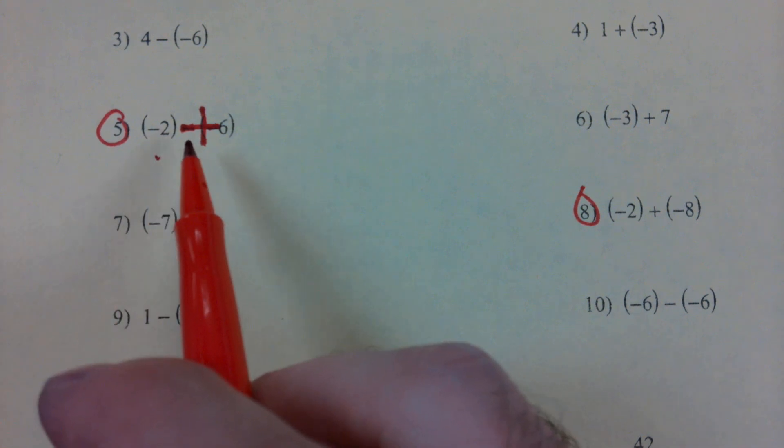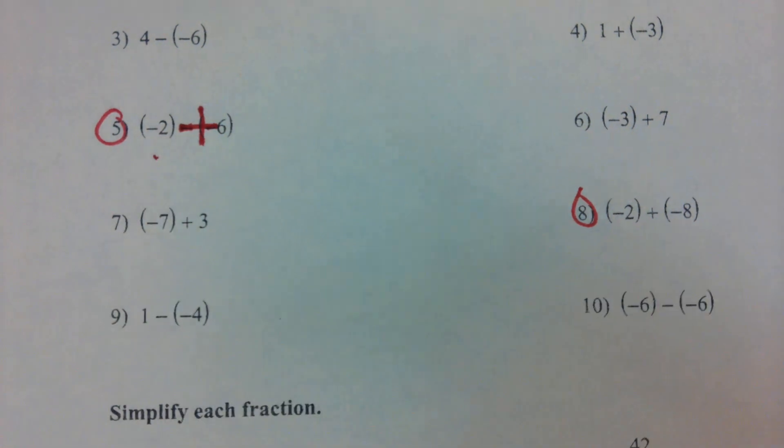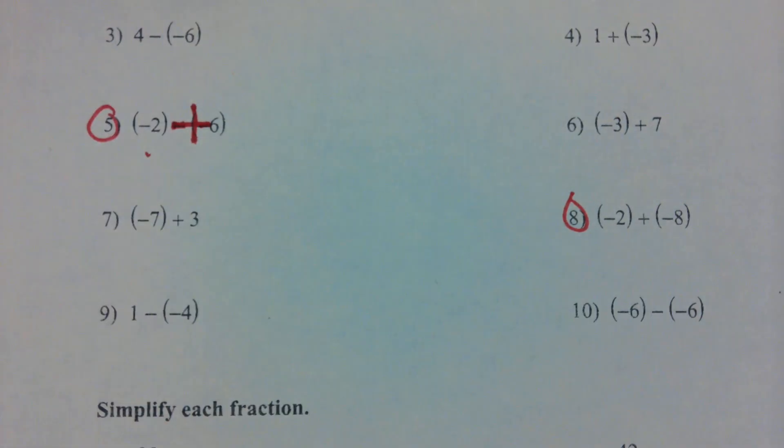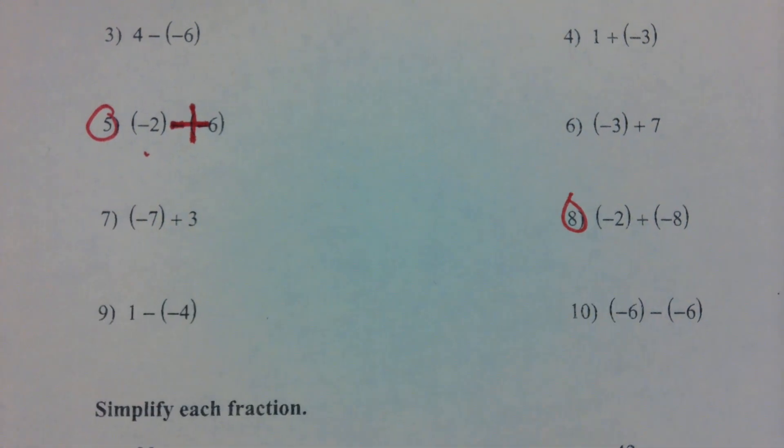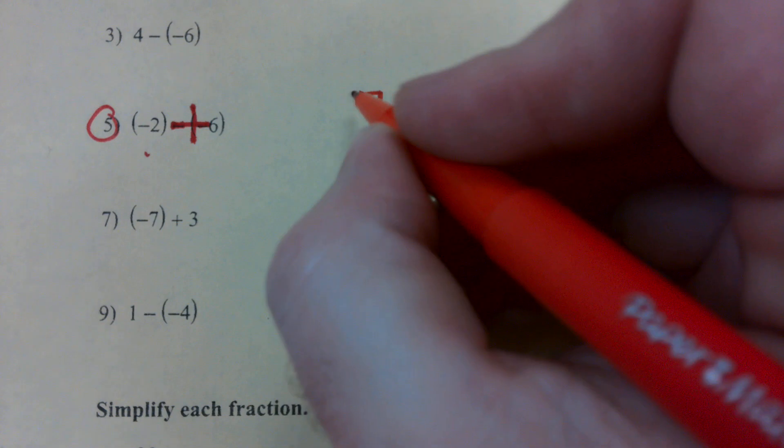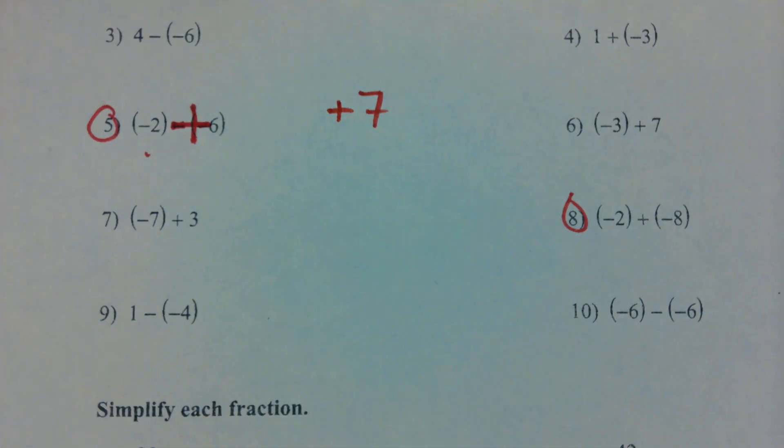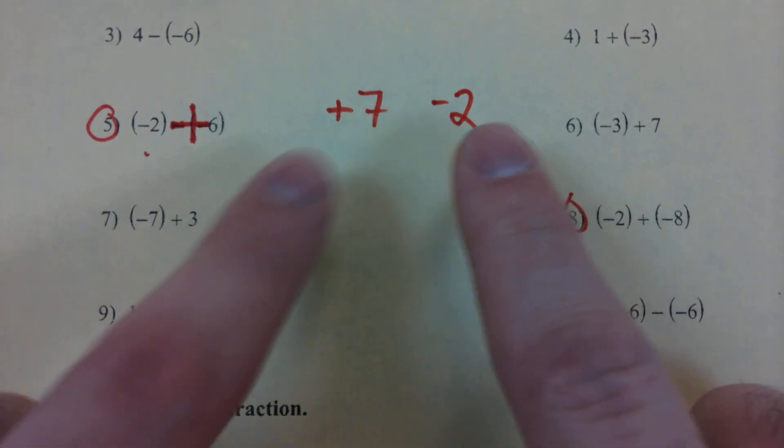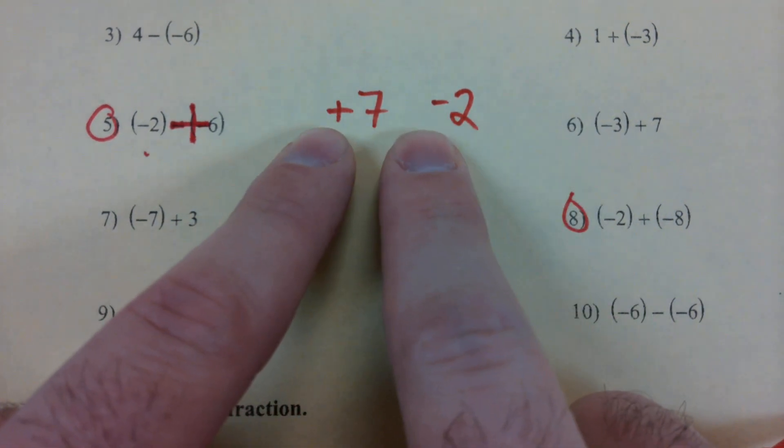Now we have negative two plus six. For some of you this might be simple, but here's an easy way to break this down. Every single number has a sign in front of it. If I gave you this number here, what sign is in front of that number? A plus sign, right? Even though we don't have to write it, we know there's a plus sign. And if I gave you this number, what sign is in front? A negative sign. Every number either has a plus in front or a minus in front.